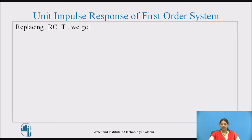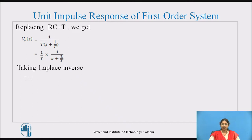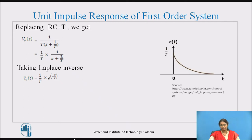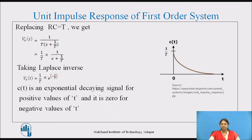Replacing RC = T, the output response can be written as Vo(s) = (1/T)·(1/(s + 1/T)). Taking the inverse Laplace transform, the output response in time domain is Vo(t) = (1/T)·e^(−t/T), where e^(−t/T) is the inverse Laplace of 1/(s + 1/T). This is the response of the first-order system for a unit impulse input. Plotting this, c(t) is an exponential decaying signal for positive values of t, and 0 for negative values of t.